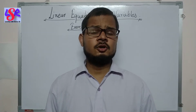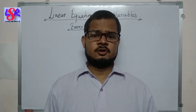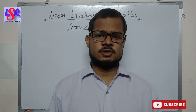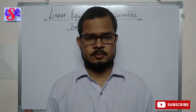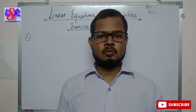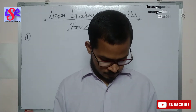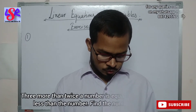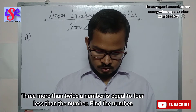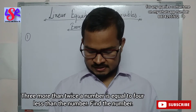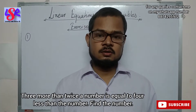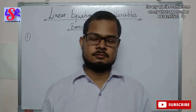Hello everyone. Here we're going to do exercise number 12.2 of the chapter linear equation in one variable. Now let's see question number 1. Here, 3 more than twice a number is equal to 4 less than the number. Find the number.